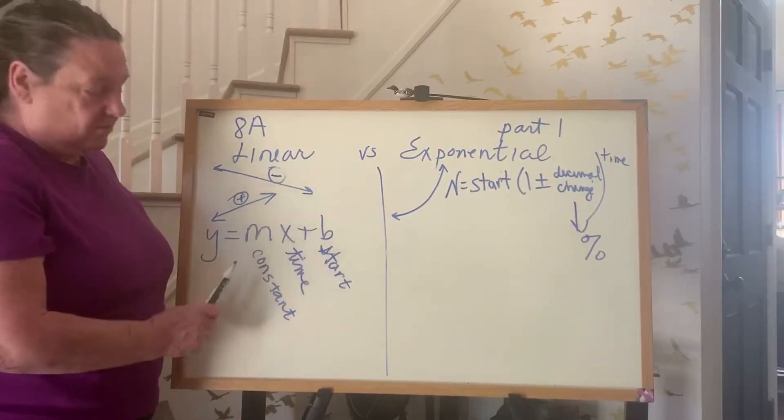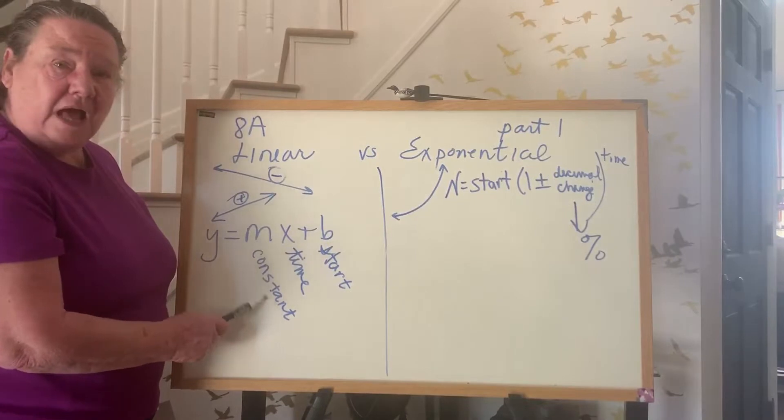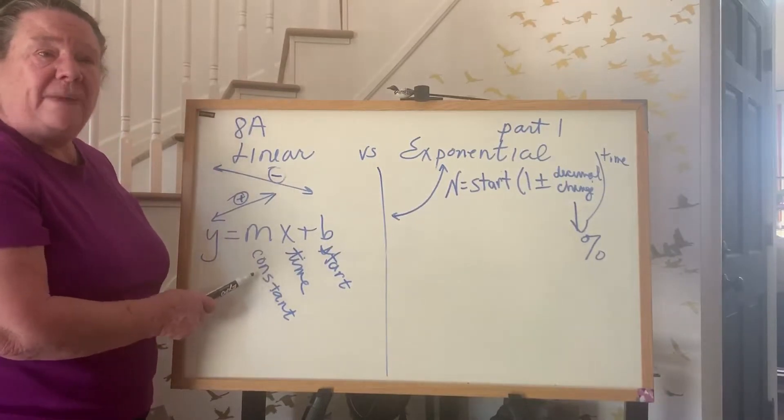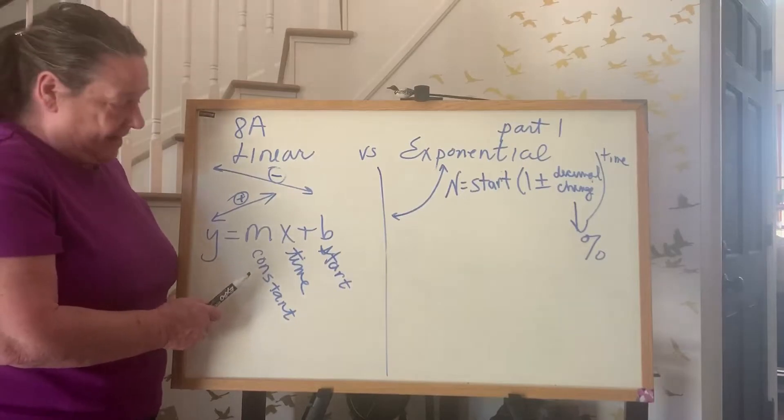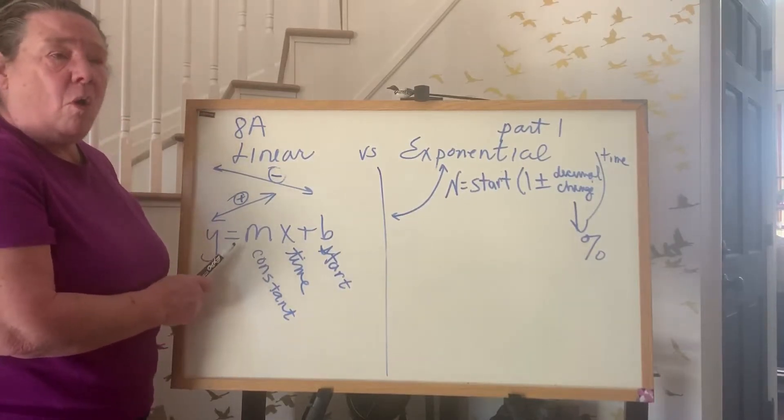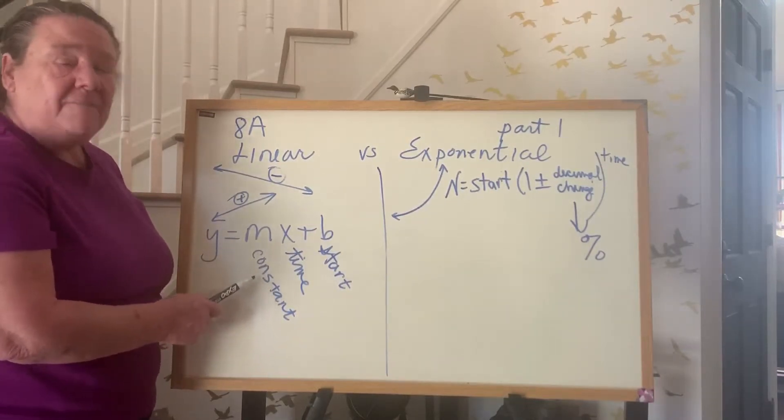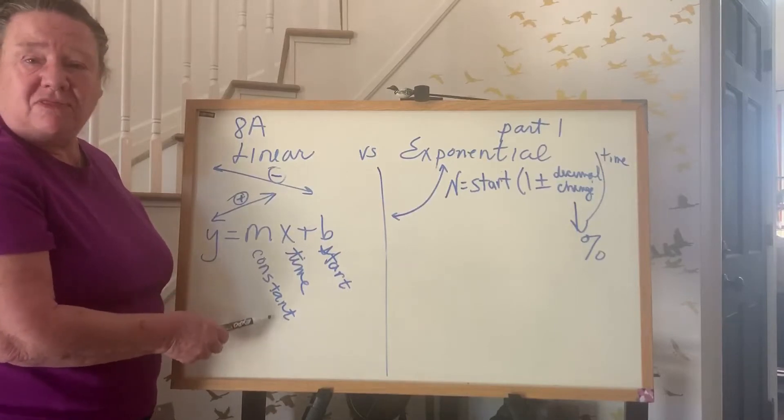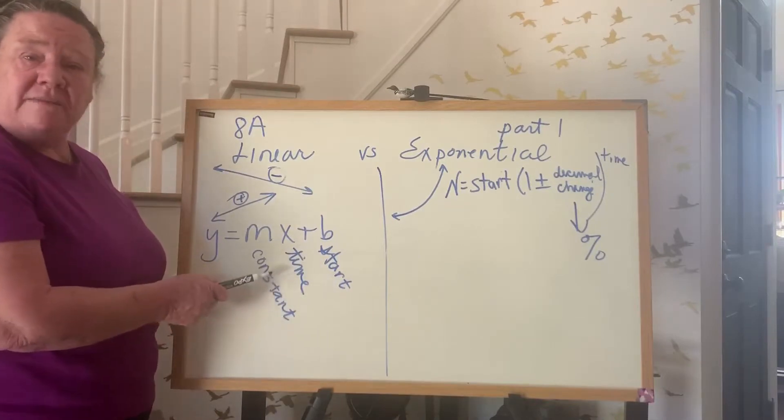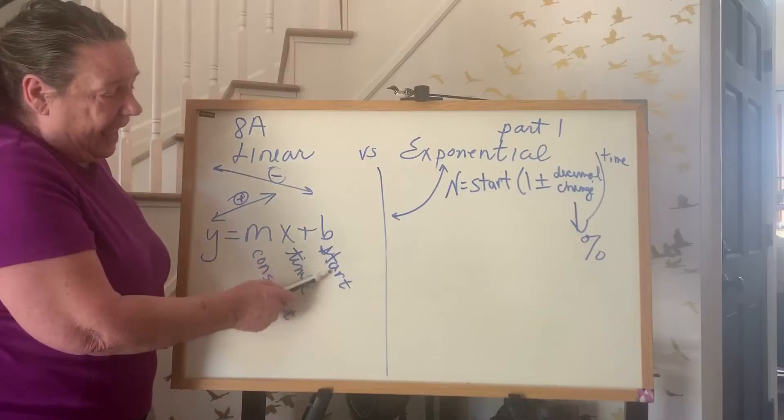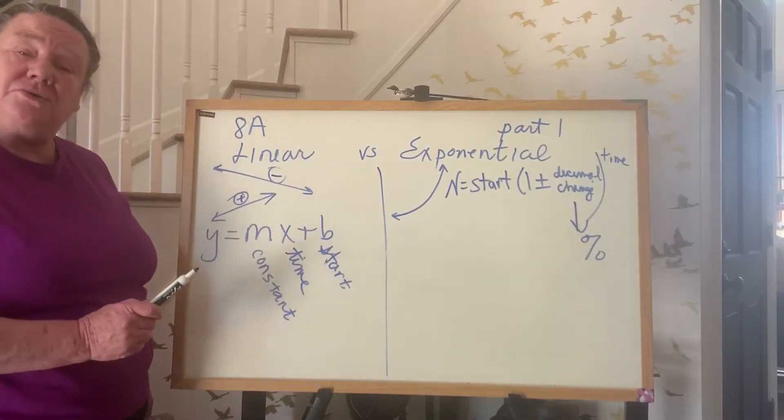And in the equation, you need to know these three things. M represents the constant change. You're paying 5 cents per mile, or you're paying 10 cents per coke, or you're losing $100 per month on the value of your bike. X is always time. Days, years, minutes, months. And b is always where you start.